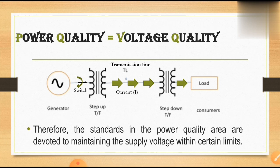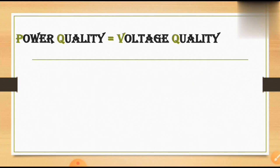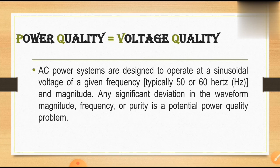Therefore, the standards in the power quality area are devoted to maintaining the supply voltage within certain limits. We have a chance to control the power by controlling the voltage, because the current depends entirely on the load. So we conclude that power quality is equal to voltage quality. AC power systems are designed to operate at a sinusoidal voltage of a given frequency, typically 50 or 60 Hz. Any significant deviation in the waveform magnitude, frequency, or purity is a potential power quality problem.